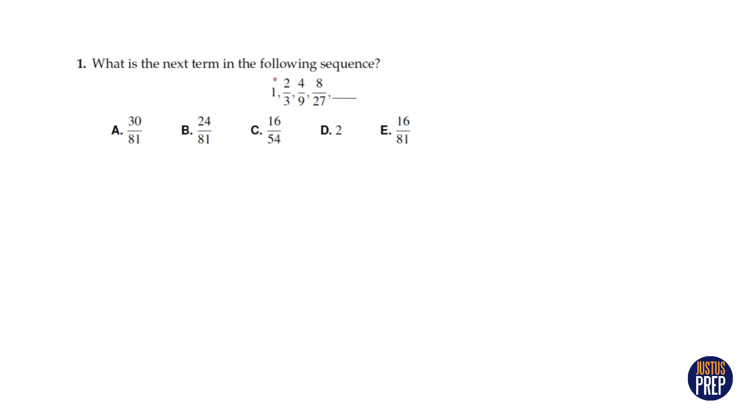Geometric means that you're multiplying the same number to each term to get the next term, whereas arithmetic means that you're adding a number. You can see that there isn't the same interval in between each of these terms. So this is not an arithmetic sequence, it's a geometric one.